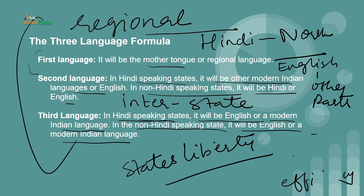As per the policy, state governments were to promote the study of modern Indian languages, preferably one of the southern languages, apart from Hindi and English in Hindi-speaking states. In non-Hindi speaking states, Hindi would be studied along with the regional language, the mother tongue and English. However, a policy cannot succeed until it is properly executed — while this policy was being followed in the south, northern states did nothing for the promotion of southern languages. This new education policy, especially of 2019, envisions an objective similar to the University Education Commission of 1950 and NEP 1965.